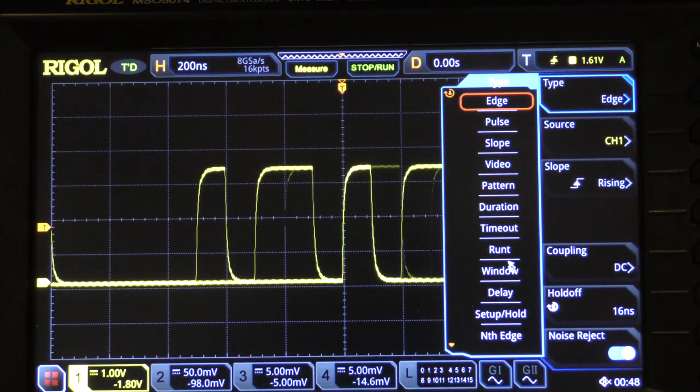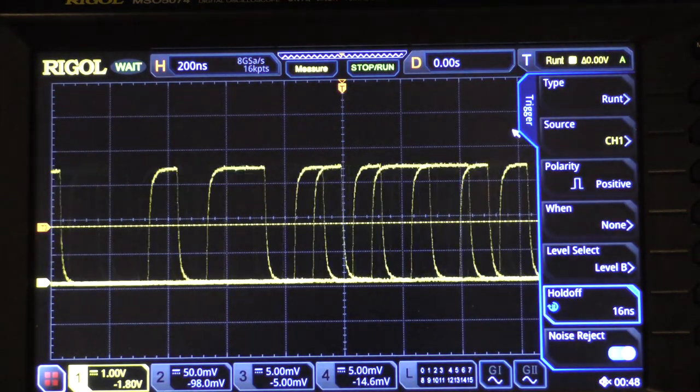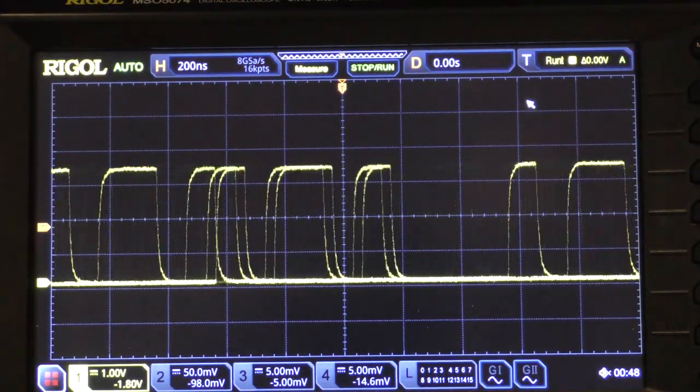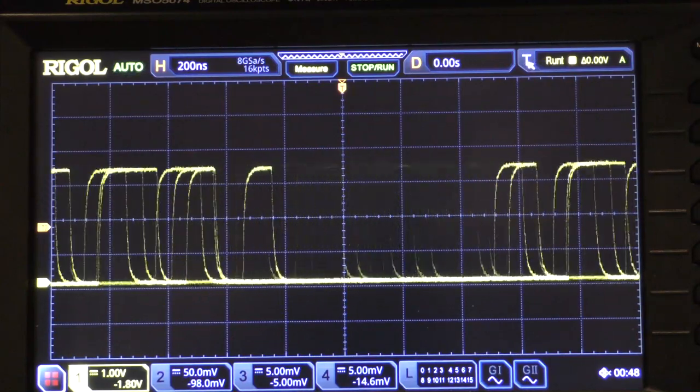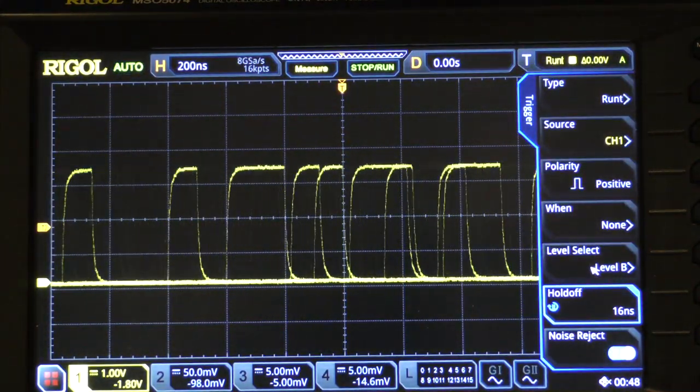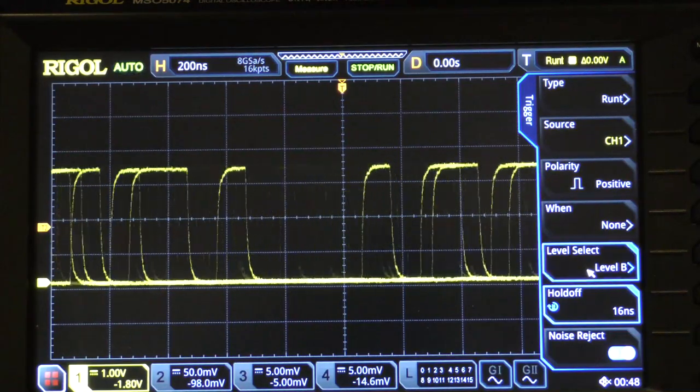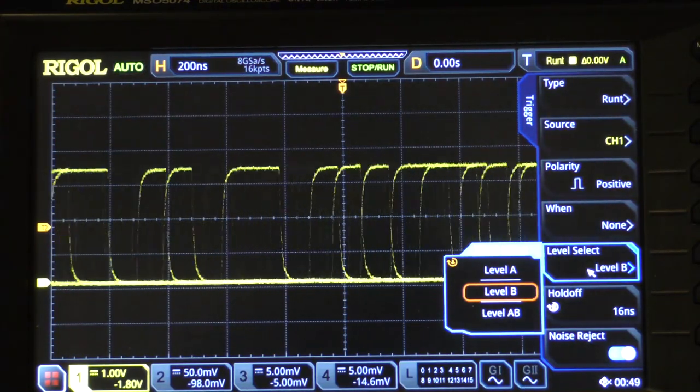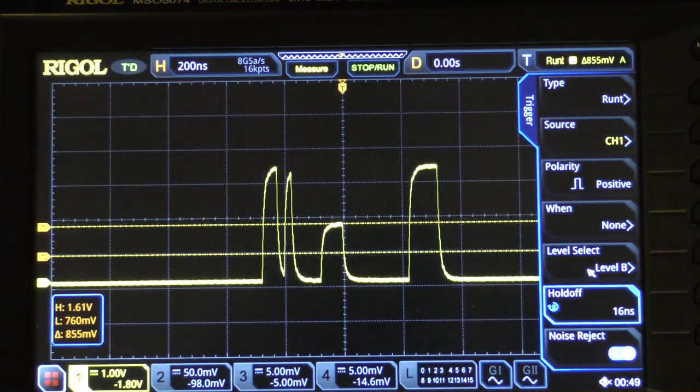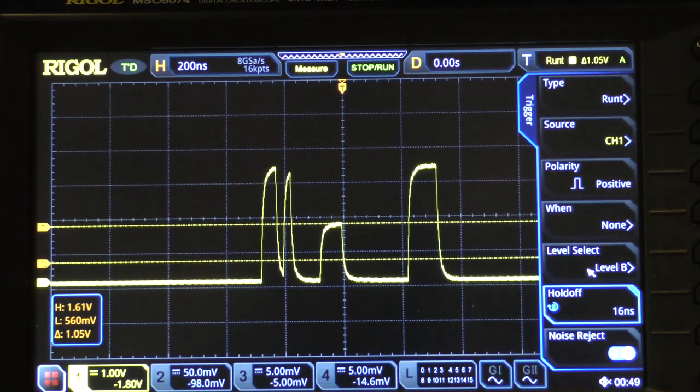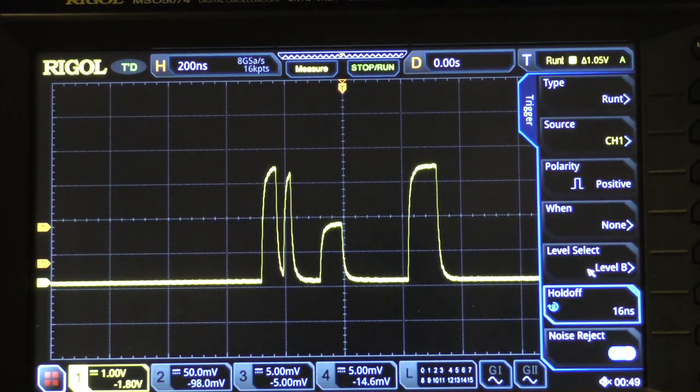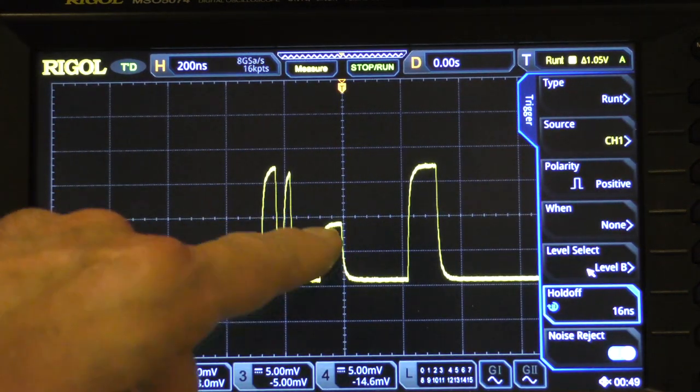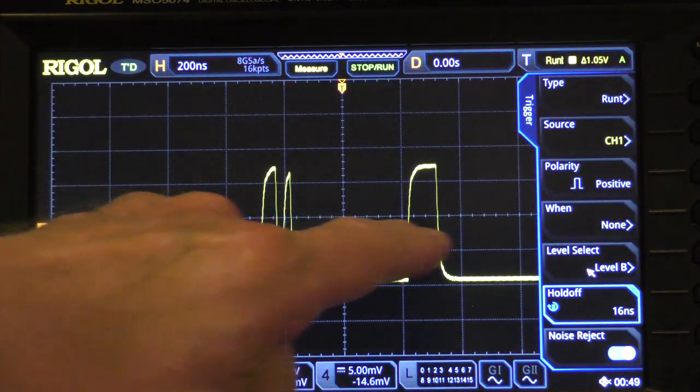We do that by going to the trigger menu and changing the type from edge to runt. Now it doesn't seem to have made things any better, but let's now adjust the trigger levels. Let's set level B, which is the baseline level, down to this area.